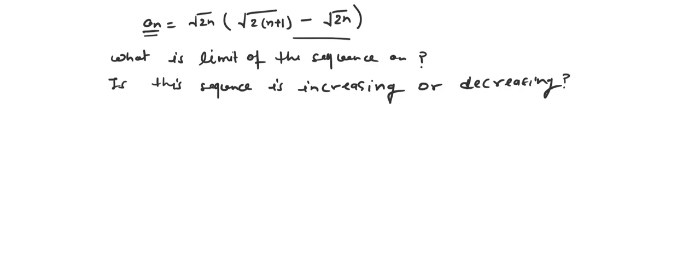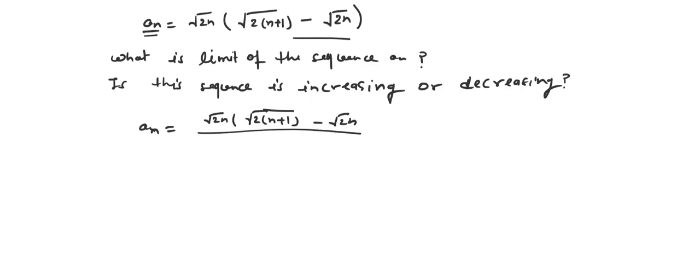To find the limit we have to do some manipulation. Let me write the term: a_n is equal to √(2n) · (√(2n+1) minus √(2n)).